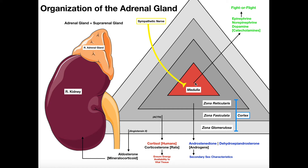The adrenal medulla is a different type of tissue than the rest of the gland. The three outer layers make up the cortex, which is endocrine tissue. The adrenal medulla is nervous tissue, and that plays a role in its function. The adrenal medulla synthesizes substances called catecholamines — three of them: epinephrine, norepinephrine, and dopamine. The vast majority released are epinephrine, a little norepinephrine, and a very small amount of dopamine. These are released directly into the blood.